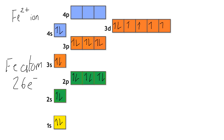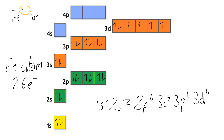However, we need to remove two electrons because it's the 2+ ion. What happens is the 4s empties before the 3d. So the actual answer is we remove the two electrons from the 4s, and that leaves you with the configuration 1s2, 2s2, 2p6, 3s2, 3p6, 3d6. So we empty from the 4s before we empty from the 3d.